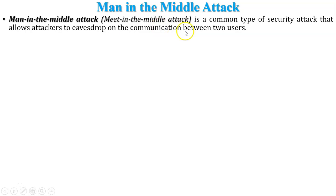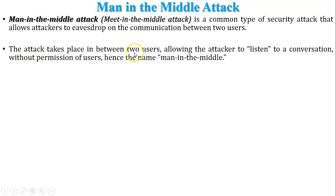It allows an attacker to eavesdrop on the communication between two users whenever two users in the same network or different networks communicate with each other. At that time, some person — an attacker or hacker — can read and modify messages during the communication. The attack takes place between two users, allowing the attacker to listen to a conversation without the knowledge or permission of either user.